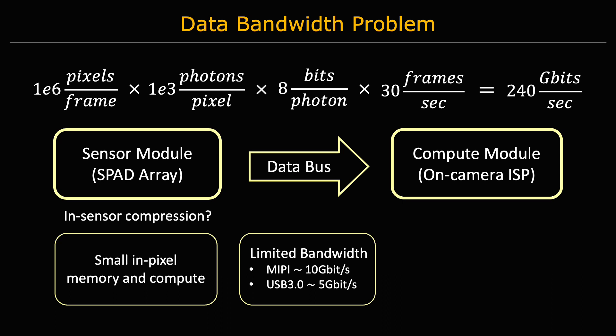The limited amount of memory and compute in the sensor makes it unfeasible to capture the full data volume and compress it prior to transferring it. Therefore, a practical implementation would compress the data as each photon is detected and never store the complete data volume. The compressed representation can then be transferred and processed in the ISP.